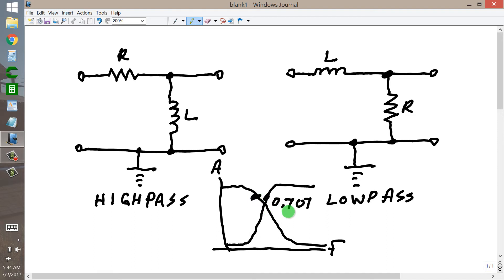And when it drops to 70.7%, or 1 over the square root of 2 times the maximum, you have 3 decibels down. And by definition, we call that the cutoff frequency, right there.